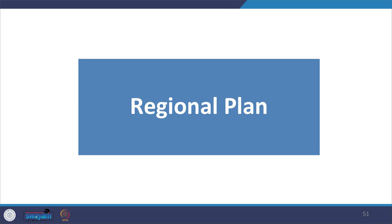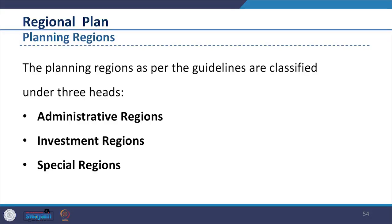Now let us look at the regional plan. In the URDPFI guidelines, it is suggested that for the planned and sustainable development of human settlements, the regional planning approach needs to be promoted. The planning regions, as per the guidelines, are classified under three heads. Administrative regions can be district regions or metropolitan regions as per the recommendation of the 73rd and 74th Constitutional Amendment Act.